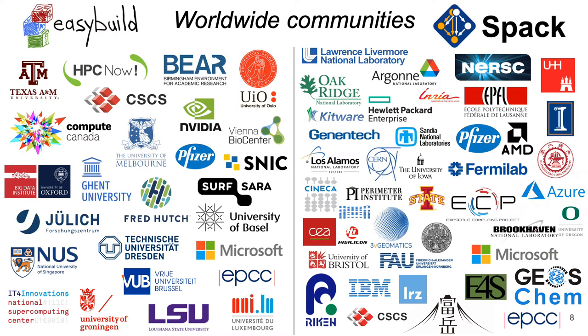This slide gives you an idea of where both EasyBuild and SPAC are used. Both tools have seen worldwide adoption shortly after the project was started. EasyBuild is used by several European and North American HPC sites, including Compute Canada, the Swiss National Supercomputing Center CSCS, and the Jülich Supercomputer Center, as well as the Fred Hutch Cancer Research Center in Seattle and companies like HPC Now and Microsoft. SPAC is broadly adopted by US National Labs and the Exascale Computing Project, as well as many HPC sites and companies around the world, like SORDEN, EPFL in Europe, RIKEN in Japan, and AMD.